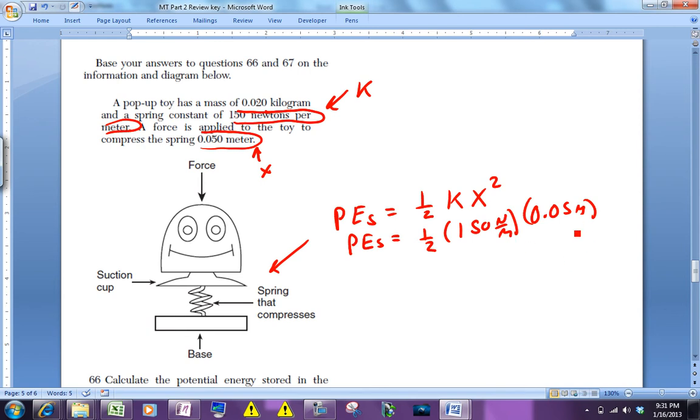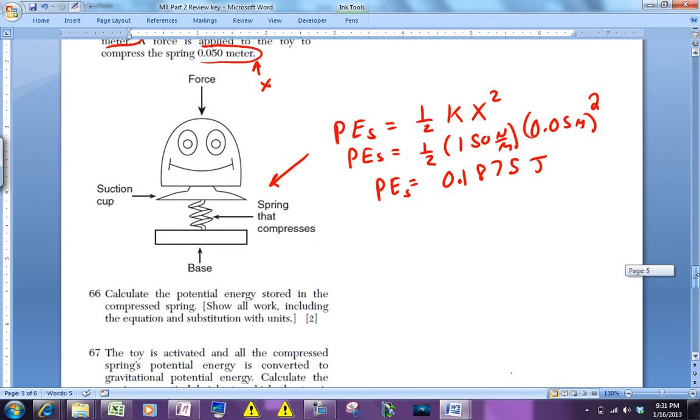At least that's the easiest way to get it, and don't forget to square that. When you plug that into your calculator you should get a potential energy of 0.1875 joules. That's the potential energy stored in that spring.